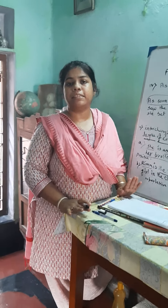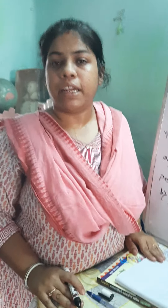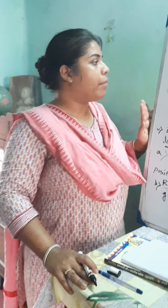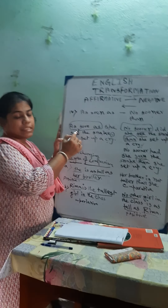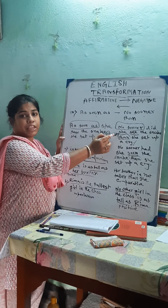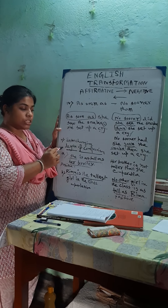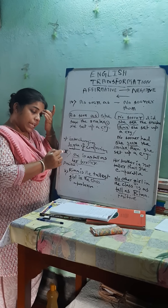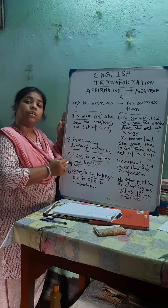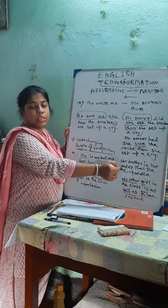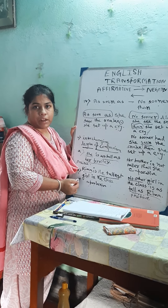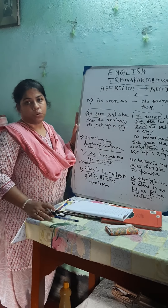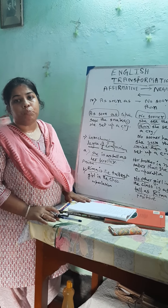Another rule remains, which will be discussed in our next class — that is assertive to interrogative. But now, to sum up: if there is 'as soon as' in a sentence, we can change it to a negative sentence by using 'no sooner than.' And when interchanging degree of comparison, if there is a positive degree sentence, we can change it to a negative using comparative degree. If there is a superlative degree sentence, we can change it to a negative using positive degree.